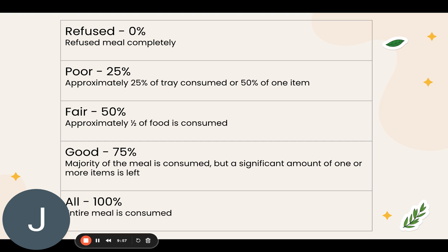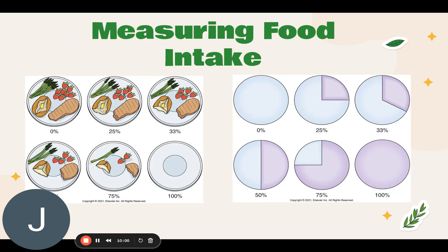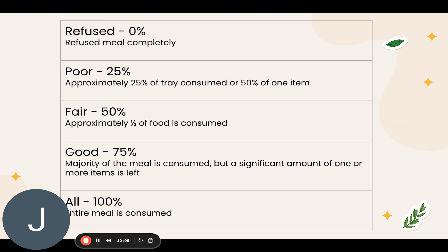This chart goes over the intake percentages. If a patient refused their meal, that is 0% — they didn't eat any. Poor intake means about 25% of the tray was consumed, or 50% of just one item. Fair means approximately one half of the food on the tray was consumed. Good, or 75%, means the majority of the meal is consumed but a significant amount of one or more items is left. And 100% means the entire meal was consumed.